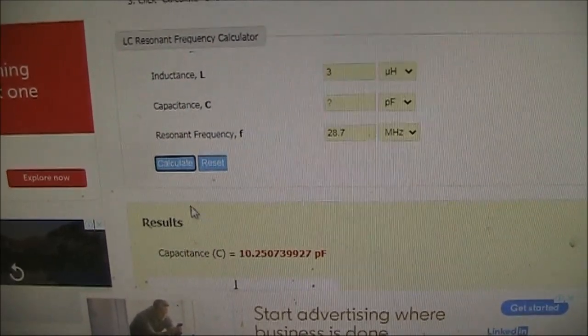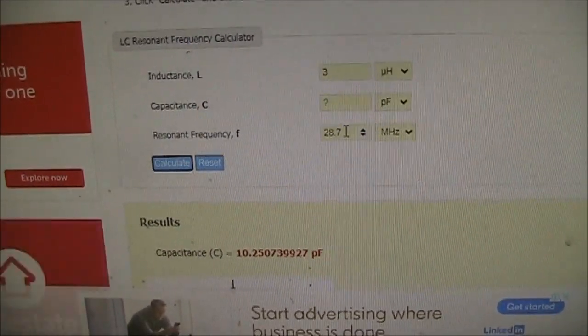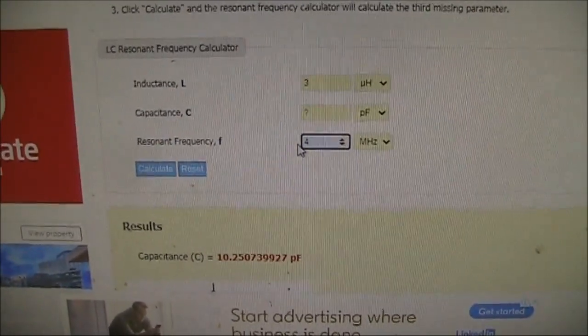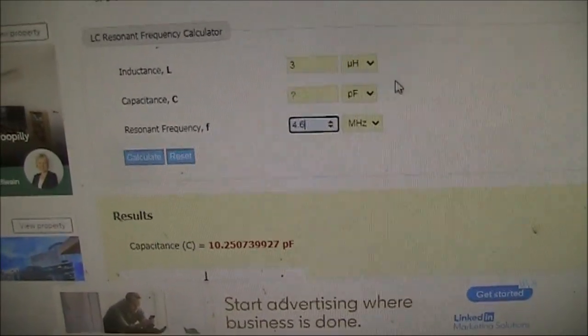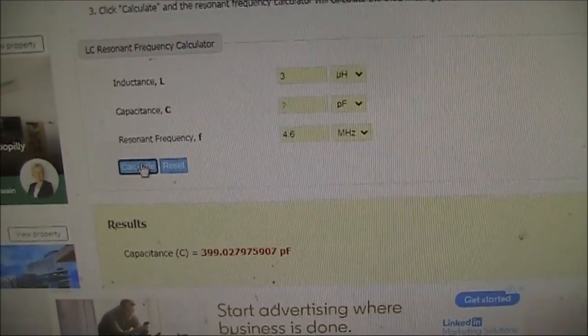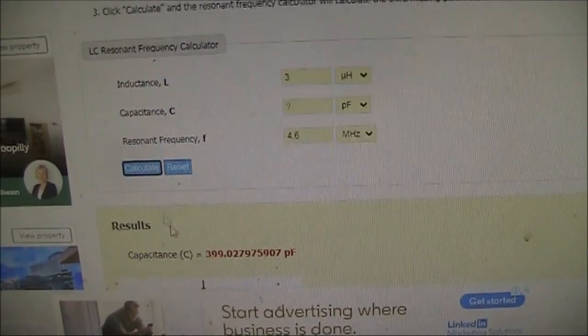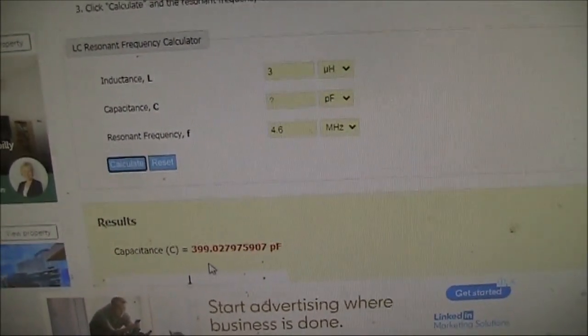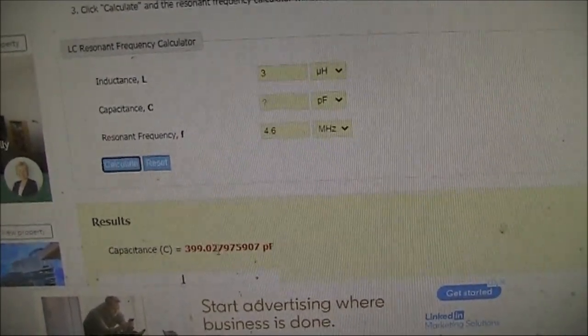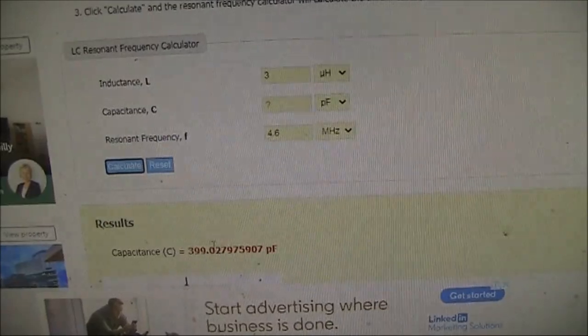And we can see its minimum is 10 picofarads, which is fairly typical for a variable capacitor. Now we'll put in 4.6MHz and calculate it again. And our capacitance is 399. So this is a 10 to 400 picofarad capacitor.